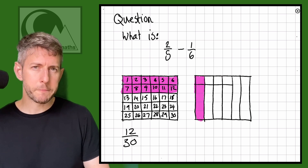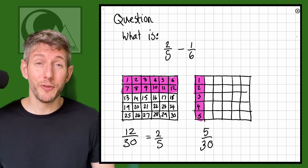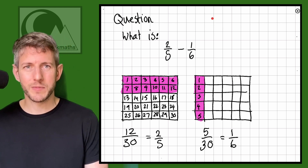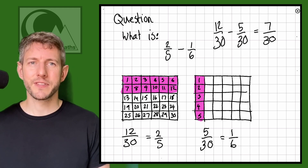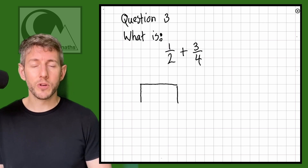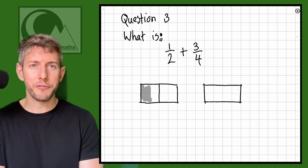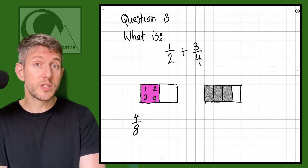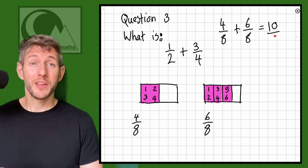The second rectangle: one sixth is five thirtieths. So twelve thirtieths take away five thirtieths gives us seven thirtieths. Now let's try one more: one half add three quarters. I draw rectangles two by four. One half of the first rectangle is four out of eight. Three quarters of the second is six out of eight. Four out of eight add six out of eight gives ten out of eight.